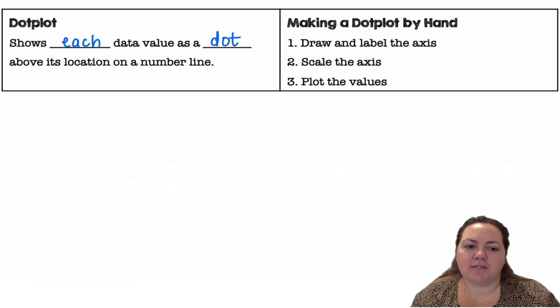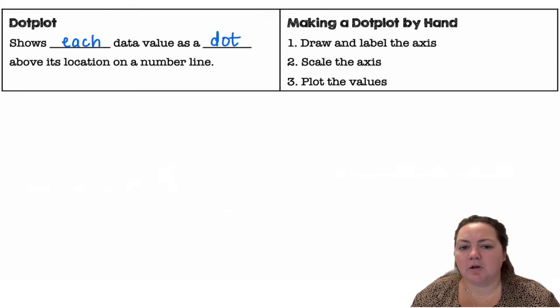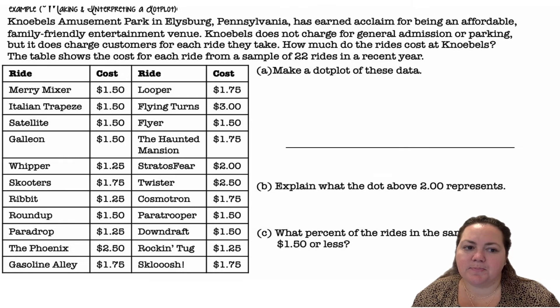A dot plot shows each data value as a dot above its location on the number line. When we're making a dot plot by hand we want to draw and label the axes, we want to scale the axis, and then we want to plot the values.